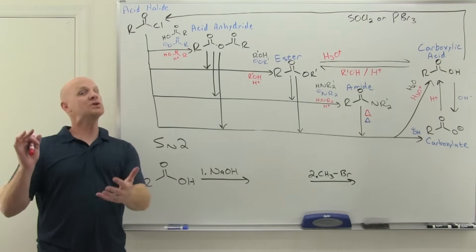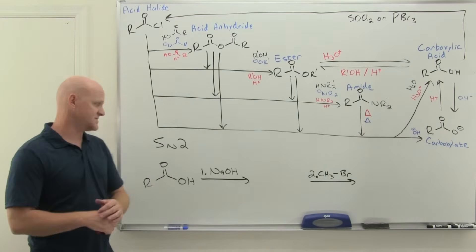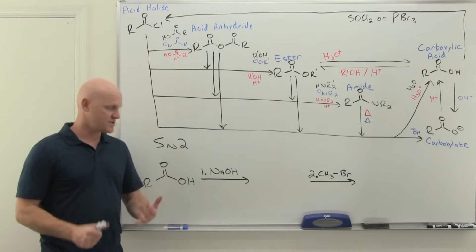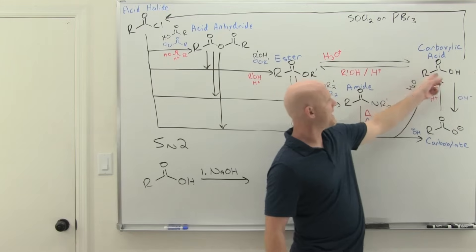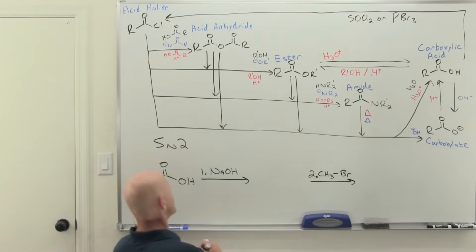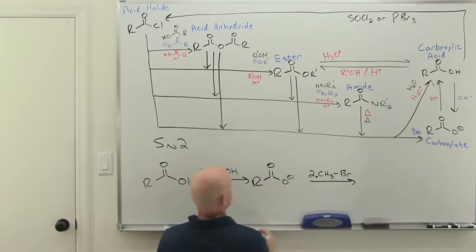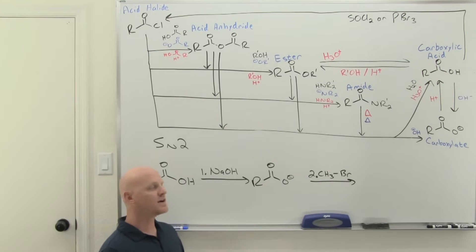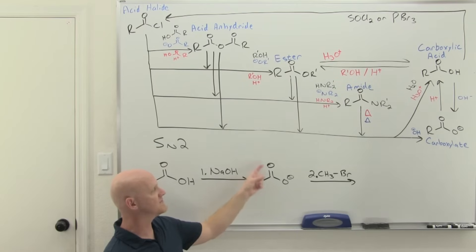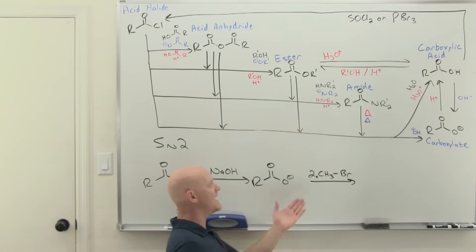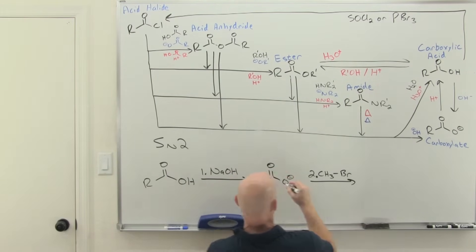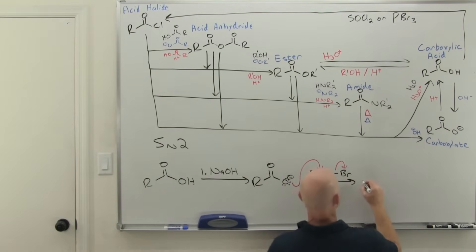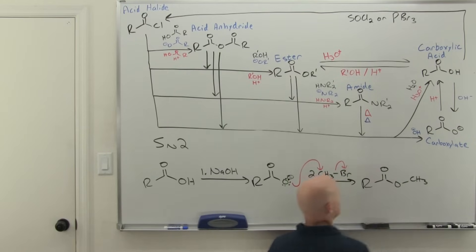The last way to make an ester is something you would have learned back in first semester when we studied SN1 and SN2 reactions. We start with the carboxylic acid, add hydroxide to deprotonate it, forming the corresponding carboxylate. The carboxylate is a moderate nucleophile — resonance-stabilized between two oxygens — but it's still strong enough to do SN2. So if you add a good methyl or primary halide, you can do backside attack, kick off the leaving group, and you've made a methyl ester.